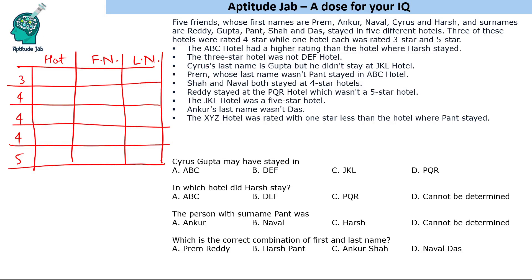Let's start with the direct information given to us. The JKL hotel was a five-star hotel. Now, the ABC hotel had a higher rating than the hotel where Harsh stayed. ABC cannot be three star because it is a higher rating, and it cannot be five star because we already know five star is JKL. So ABC will be a four-star hotel.